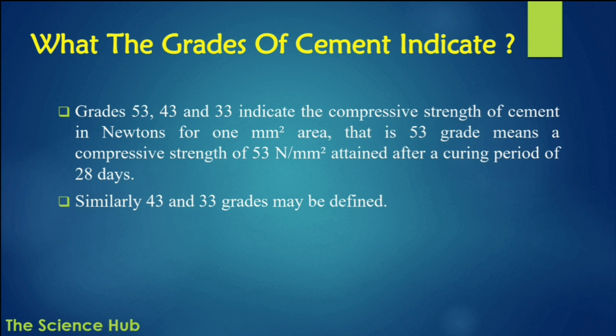The grade of cement — 53, 43, or 33 — written beside the name of the cement indicates the compressive strength of cement in newtons per mm². For example, 53 grade means a compressive strength of 53 N/mm² attained after a curing period of 28 days. Similarly, 43 and 33 grades are defined in the same manner.